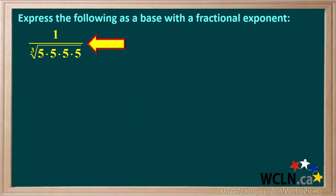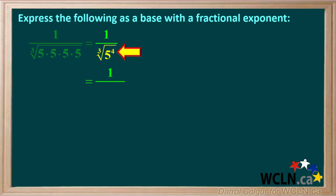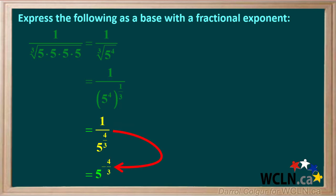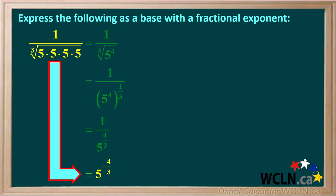Let's do another example. We're asked to write this expression as a base with a fractional exponent. We can write 5 times 5 times 5 times 5 times 5 as 5 to the power of 4. The cube root of 5 to the power of 4 can be written as 5 to the power of 4 in brackets, to the power of 1 over 3. The exponent 4 inside the bracket times the exponent 1 third outside gives 5 to the power of 4 over 3. And 1 over 5 to the power of 4 thirds is the same as 5 to the negative 4 thirds, so the given expression can be written as 5 to the negative 4 thirds.